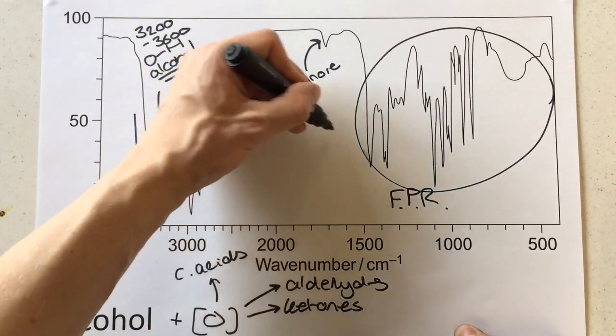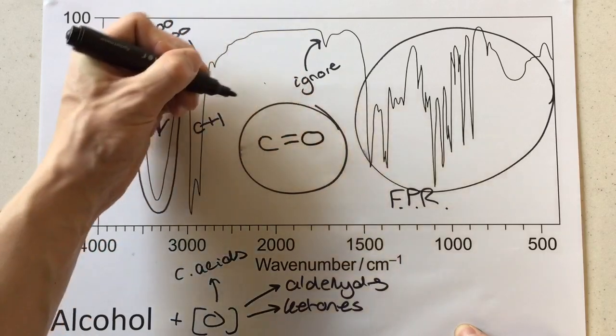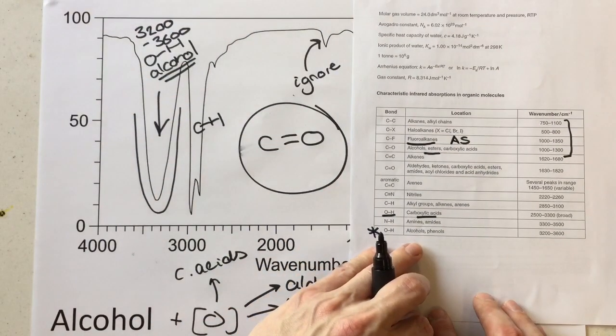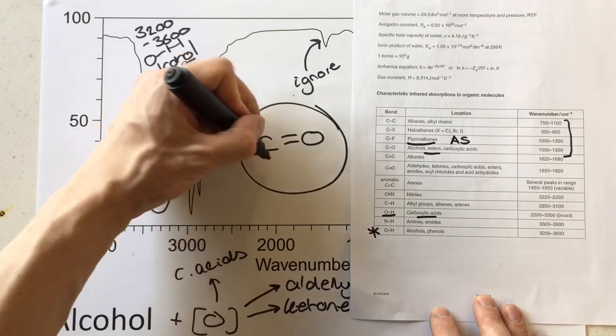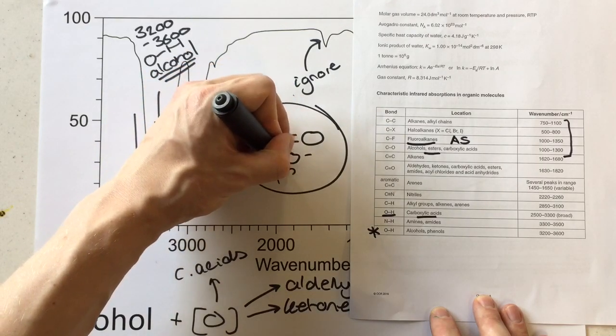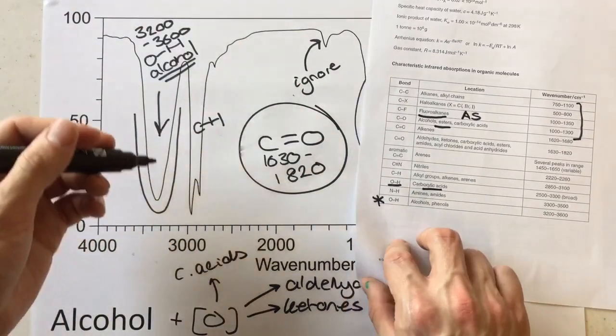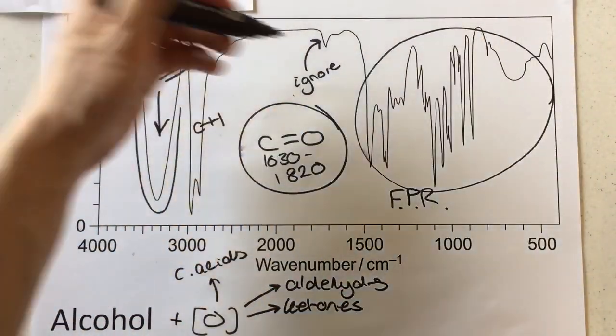Now the C double bond O peak—just to reiterate, we always use our data sheet for these regions—we've got 1630 to 1820 for that C double bond O. We would look for the presence of that very major, which means it's going to be quite a long peak appearing in here.